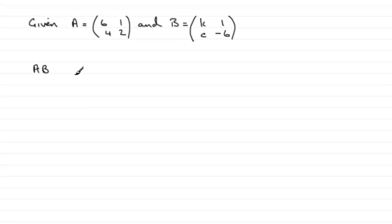Okay, so to do this, I would just put AB equals, copy down these two matrices then. So we've got 6, 4, 1, 2, multiplied by K, C, 1, minus 6.